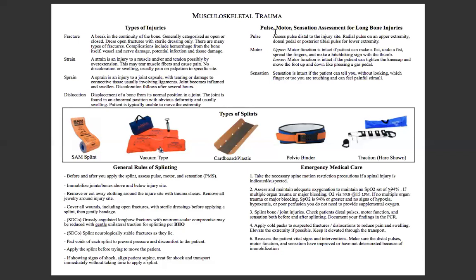Every time you're going to put a splint on a patient — whether it be a fracture, strain, sprain, or dislocation — we always want to check what's called PMS: pulse, motor, and sensation. For pulse, we're going to assess the pulse distal to the injury site — the radial pulse for upper extremities, and either a dorsal pedal or a posterior tibial pulse for lower extremities.